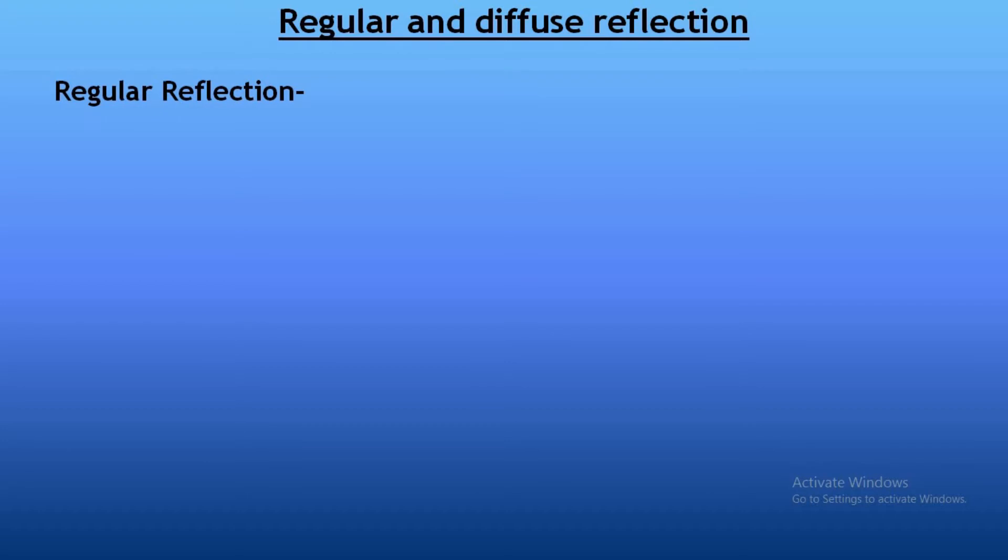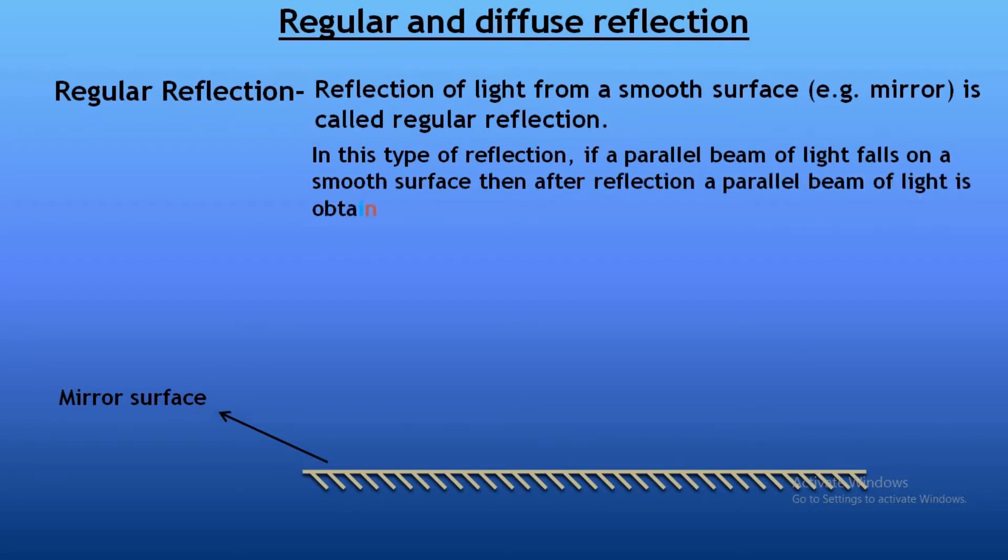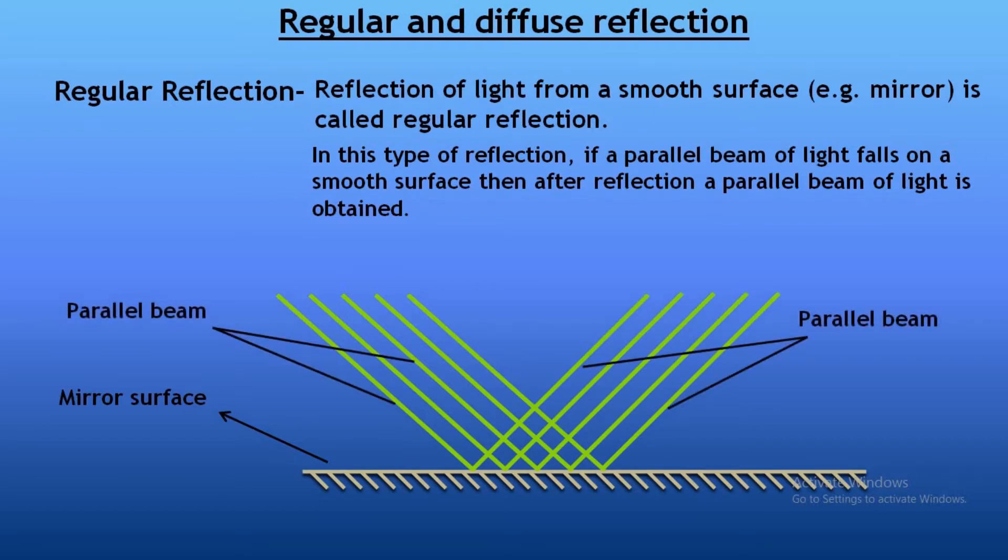Regular reflection: Reflection of light from a smooth surface like a mirror is called regular reflection. In this type of reflection, if a parallel beam of light falls on a smooth surface, then after reflection a parallel beam of light is obtained. That's why this type of reflection is called regular reflection.